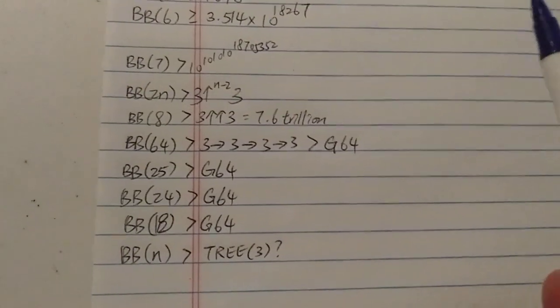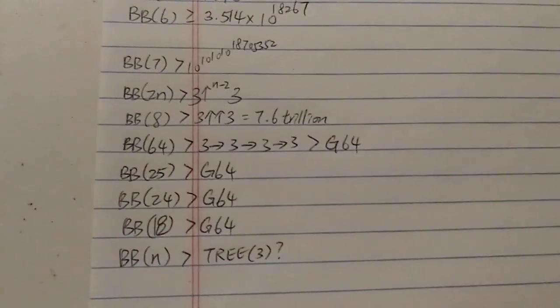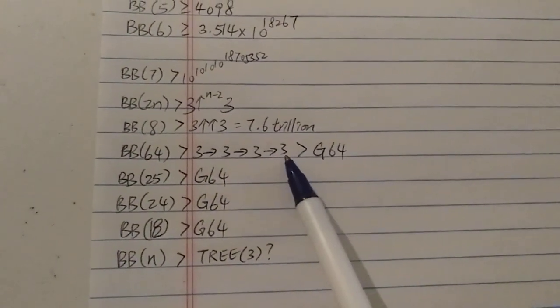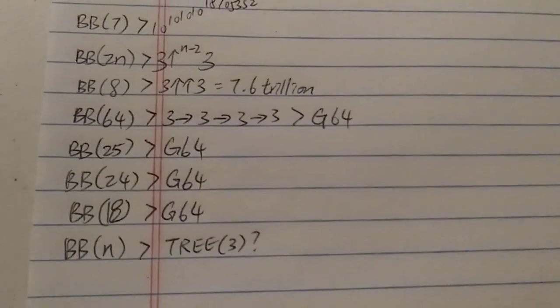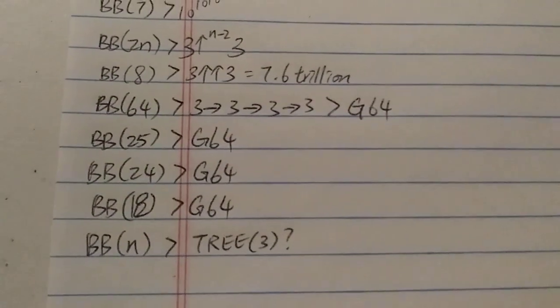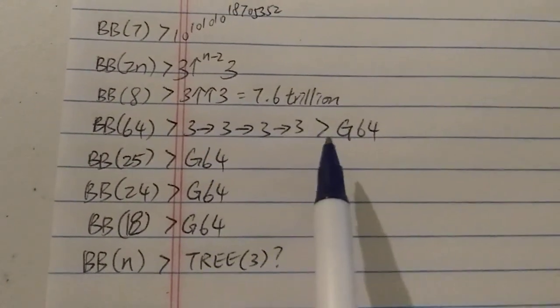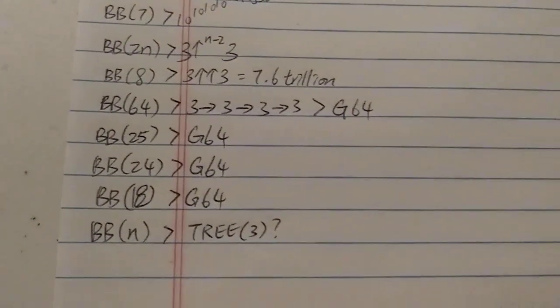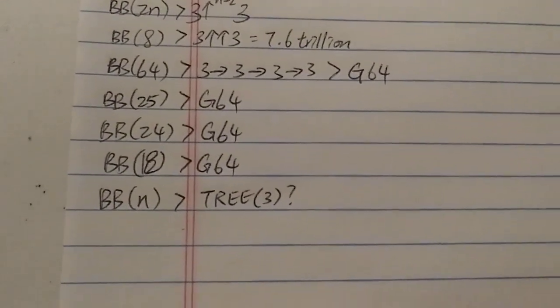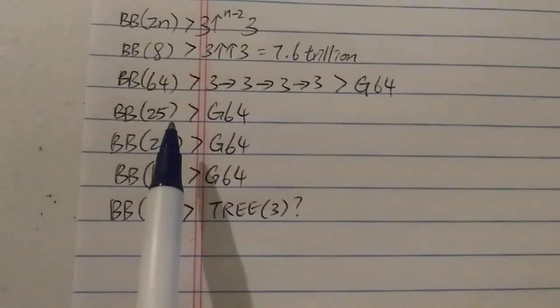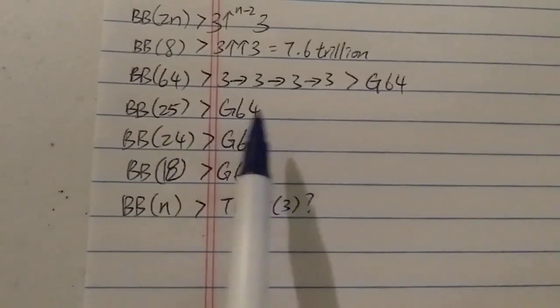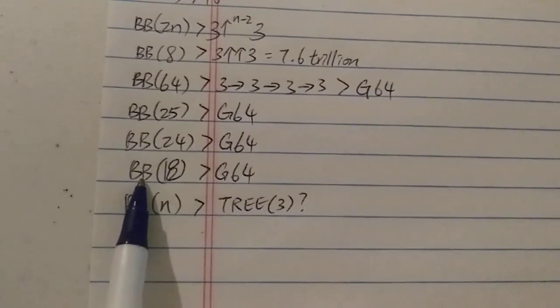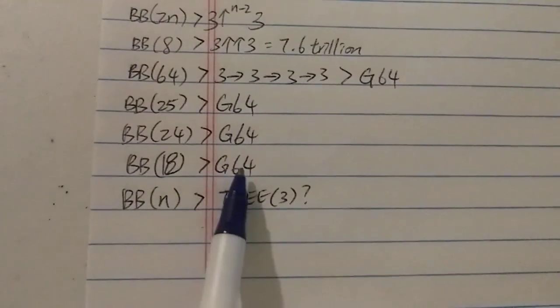What about busy beaver versus the G sequence or Graham's number? It has been proven that BB(64) is bigger than 3→3→3→3 using Conway chain arrow notation, and this number is way bigger than G(64). Therefore, BB(64) is way bigger than Graham's number. Later on, people have proven that BB(25) is already bigger than G(64), and later they reduced the number to BB(24), and most recently it was proven that BB(18) is bigger than G(64).